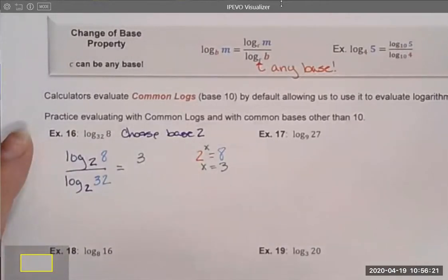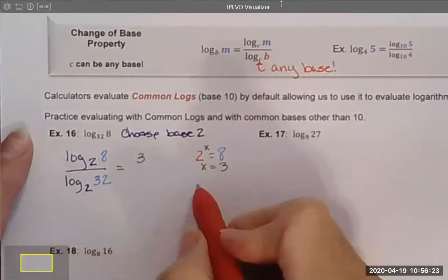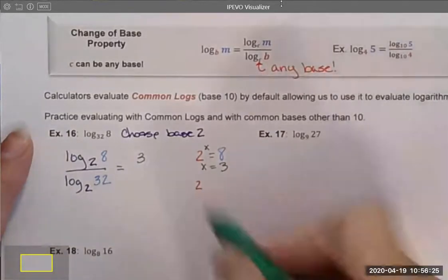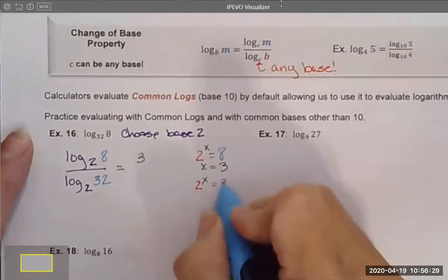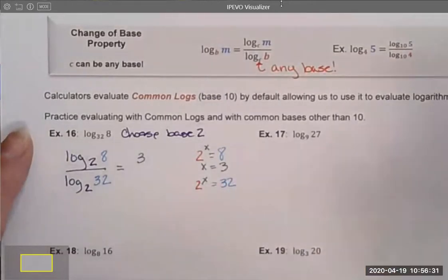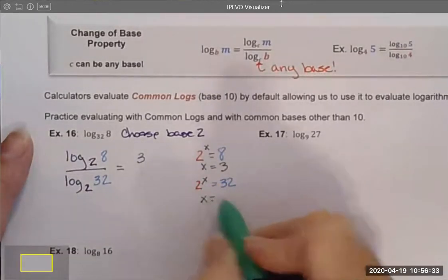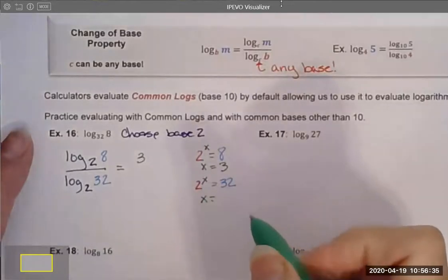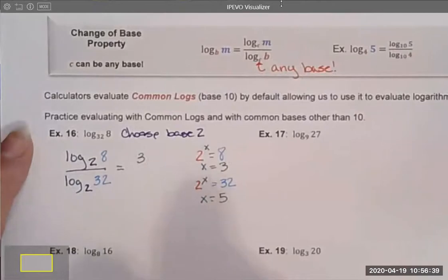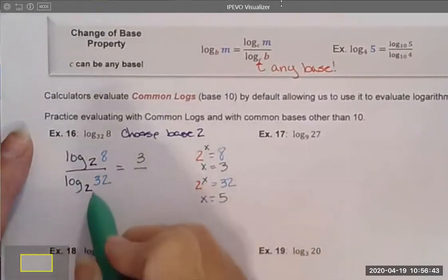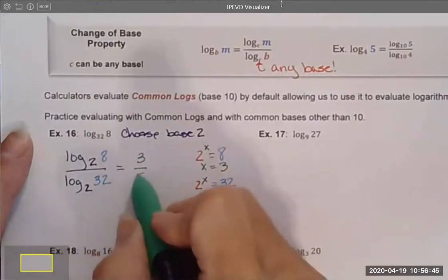And I can do the same thing for the denominator. I can ask myself, 2 to what power is equal to 32? And in this case, I just keep 2 times 2 is 4 times 2 is 8 times 2 is 16. I can run up my chain and end up with 2 to the fifth power equals 32. So I can rewrite log base 2 of 32 as a 5.